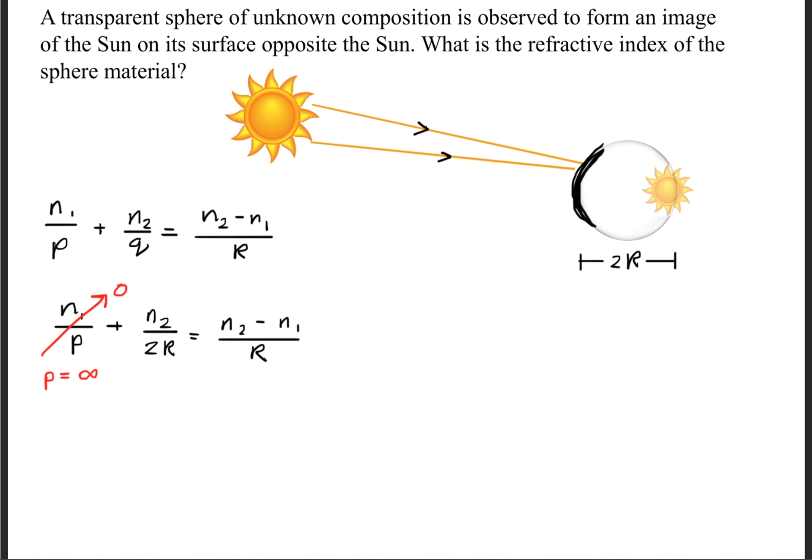But also note that we can simplify this further, because the object, which is the sun, is so far away, we can label that at an infinite distance. So we can go ahead and neglect this and call this 0. So now we have n sub 2 over 2r is equal to n sub 2, and this first index of refraction, we'll just assume it to be 1, because the index of refraction for air is simply 1, and we'll divide that by the radius.